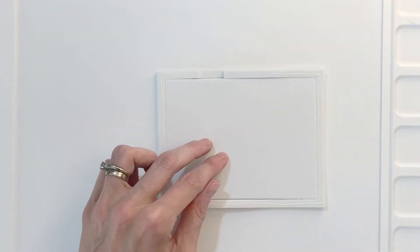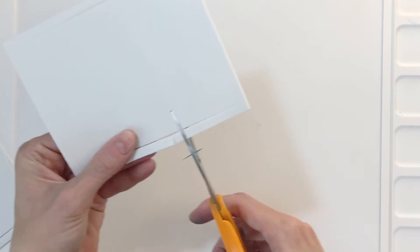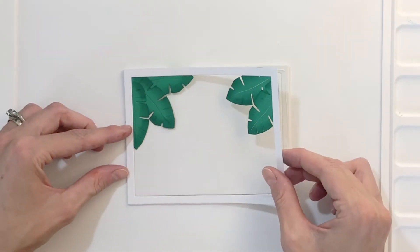So once I've done one, I'll just repeat this process for the second frame here. Just place that trimmed frame right on top of the untrimmed one, use my pencil to mark it and then just cut that section out. Now I'm ready to glue these frames together.